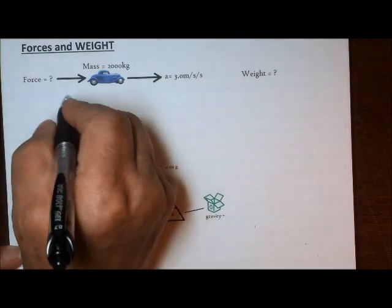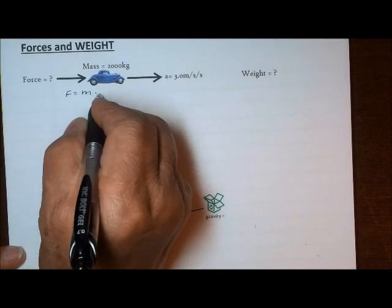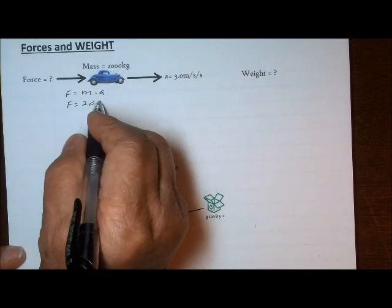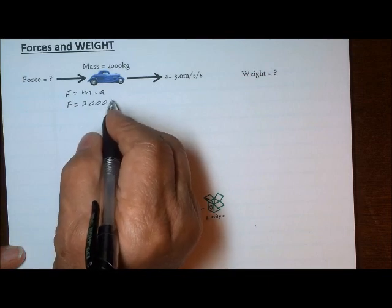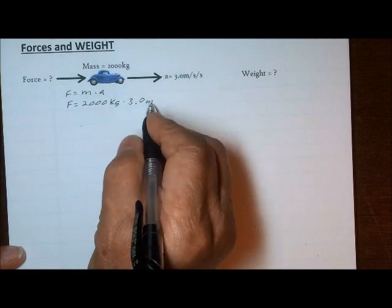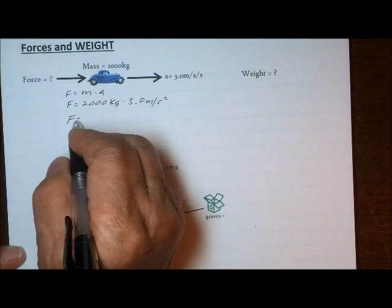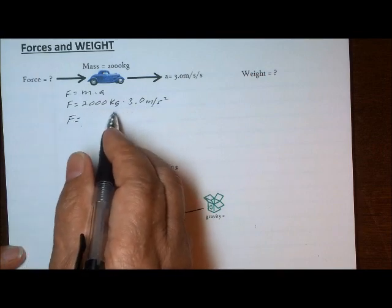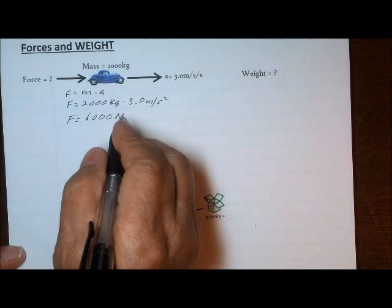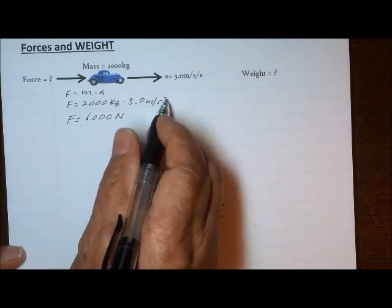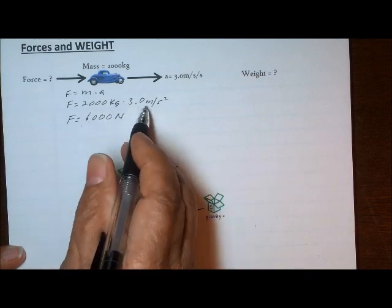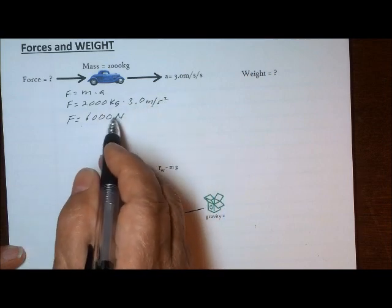It's a pretty simple problem. We just use force equals mass times acceleration. That means the force is 2,000 kilograms times 3 meters per second squared, giving us 6,000. And that works out to Newtons — a kilogram meter per second squared is the same as a Newton. So rather than saying 6,000 kilogram meters per second squared, we can say 6,000 Newtons.